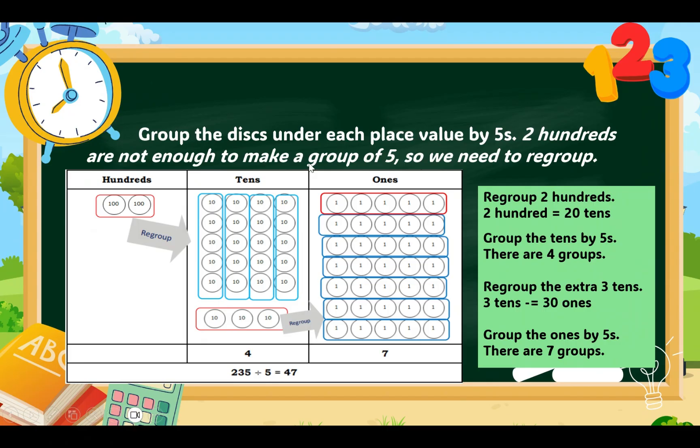So, 30 tens is grouped into 5. So, there are 6 groups of 5 for 30 tens. And the original 5 ones is added. So, 6 plus 1, we have 7. So, 4, 7 or 47. Therefore, 235 divided by 5 equals 47.